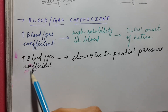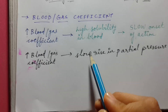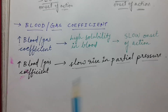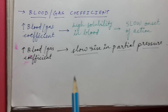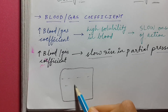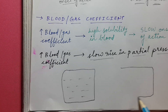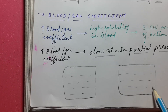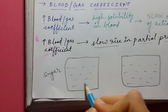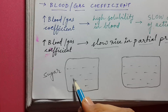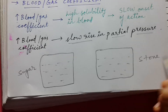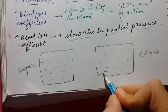Another important point: if the blood-gas coefficient is higher — meaning the drug is more soluble in blood — the partial pressure will rise slowly. To understand this, imagine a closed tank filled with water. If you add sugar, it simply dissolves in the water without affecting pressure. In a second closed tank, if you add the same amount of stone instead, the water level rises and the pressure increases.